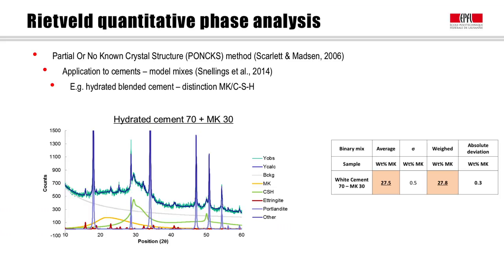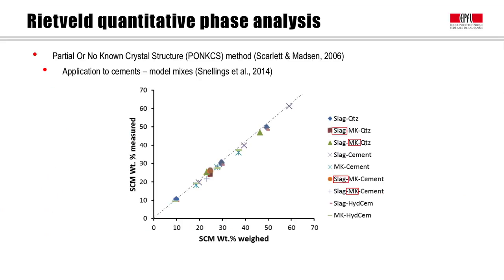However, the situation becomes more complex when different kinds of CSH are formed in blended cements of different composition. The peak profiles start to change, or there is the presence of other amorphous phases that can limit or bias the quantification. In synthetic blends, the method can be used very well, as shown in the figure here, where there is an excellent correlation between the weighed amount of SCM on the x-axis and the measured amount by PONX analysis on the y-axis. This may be very useful for process control in the production of ternary or quaternary blended cements.